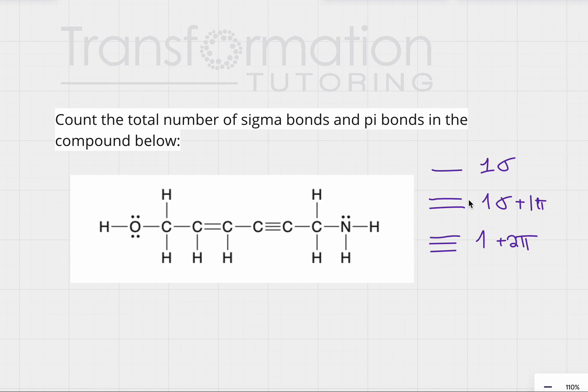First, if we have a single bond, that means we have one sigma bond. If we have a double bond, that means we have one sigma and one pi bond. And if we have a triple bond, that means we have one sigma and two pi bonds.